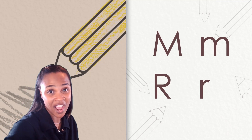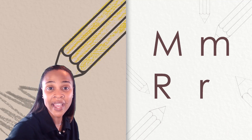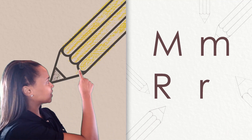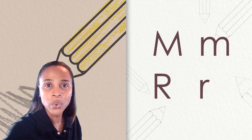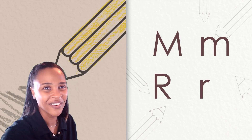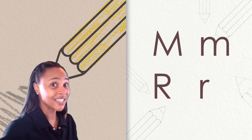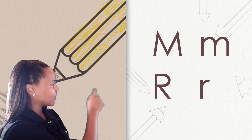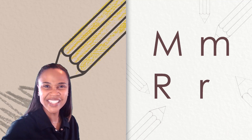Now let's try to skywrite the letter R. I will start with the uppercase R, say the sound, and then you'll try: R, R, R. Your turn. Now let's try the lowercase R starting at the middle line: R, R. Your turn. Good job skywriting.